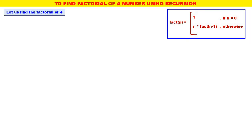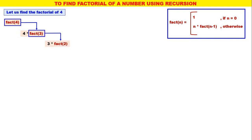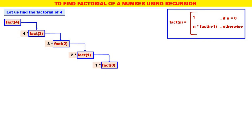Now let us find the factorial of 4. What is fact of 4? 4 into fact of 3. What is fact of 3? 3 into fact of 2. What is fact of 2? 2 into fact of 1. What is fact of 1? 1 into fact of 0. Now, fact of 0 — when n is equal to 0, fact of 0 is 1, because whenever n is equal to 0, the factorial is 1.